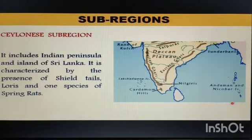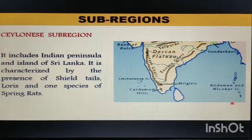The second sub-region of the Oriental Region is the Ceylonese Sub-region. It includes the Indian Peninsula and the island of Sri Lanka. It is characterized by the presence of slow lorises and one species of spring rats.